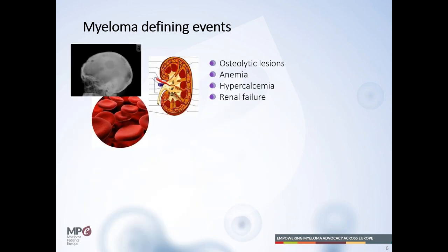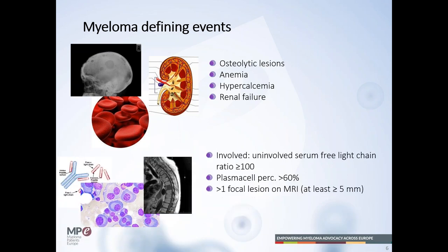The original myeloma defining events, when we started to treat patients, included osteolytic lesions, anemia, hypercalcemia, or renal failure. But other features were also found to predict myeloma occurring in around 80% within two years: a ratio of involved versus uninvolved serum free light chain of more than 100, a plasma cell percentage of more than 60%, and more than one focal lesion. These ultra-high-risk smouldering myelomas are now defined as having multiple myeloma and are therefore being treated.